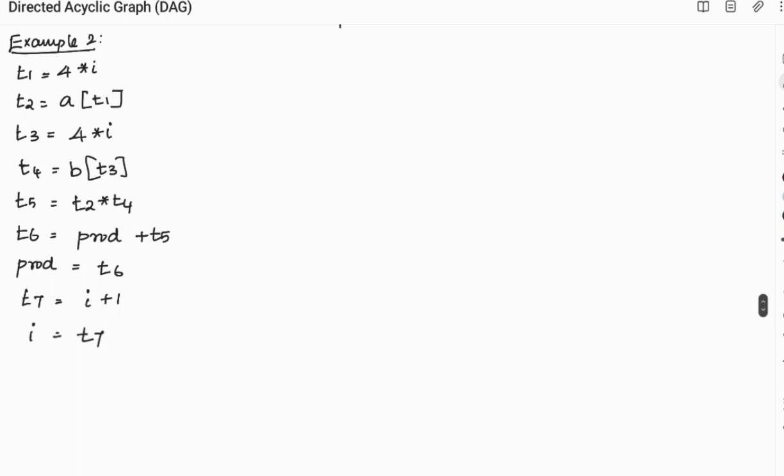Now we will see another example. So here I have given the list of lines where we have a basic block. So we will go step wise. So the first step is we have to multiply 4 with i and assign to a temporary variable t1. So I am doing the multiplication operator with 4 and i and I am assigning it to t1, first step.